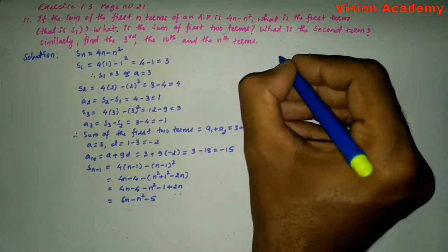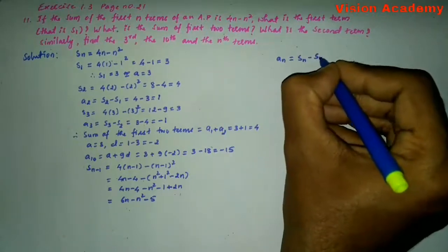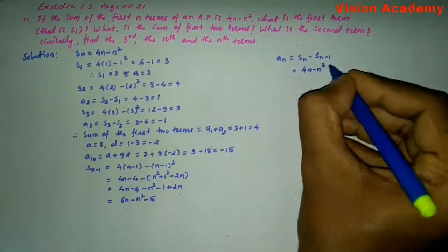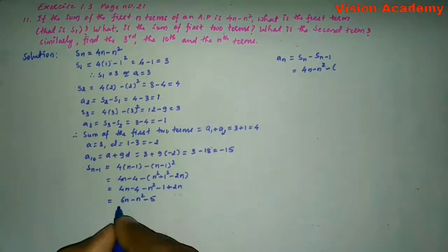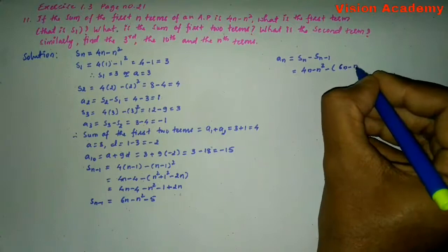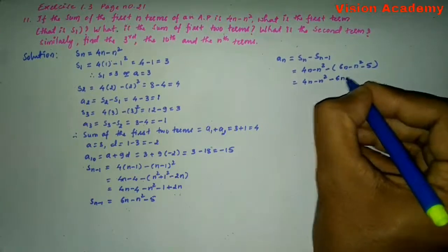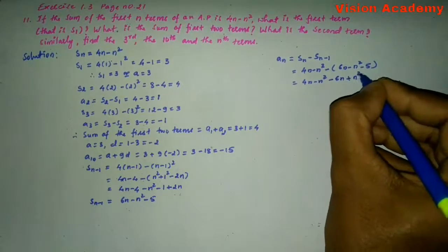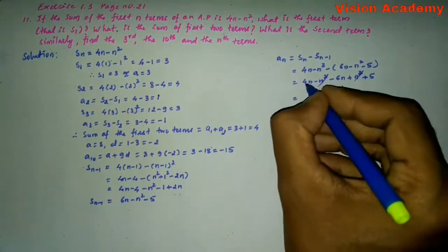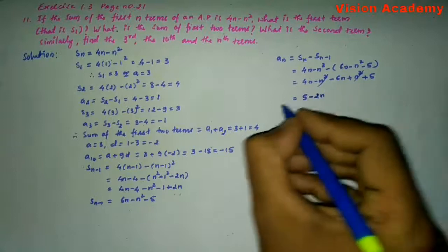Now we will find the Nth term. The Nth term An is equal to Sn minus S(n-1). Sn is 4N minus N square, minus S(n-1) which is 6N minus N square minus 5. The N square terms cancel. We get 4N minus 6N plus 5, which remains as 5 minus 2N. Therefore, the Nth term An is equal to 5 minus 2N.